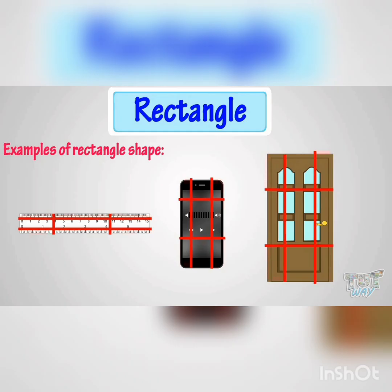Next shape is rectangle. Rectangle also has four corners, but two long sides and two small sides. Example: door, window, and books.